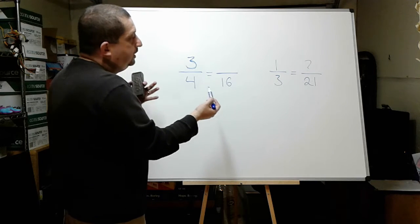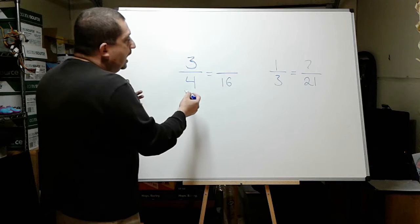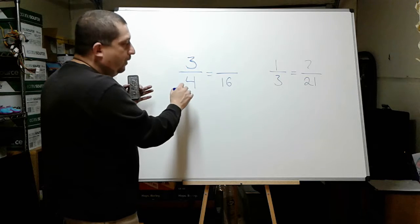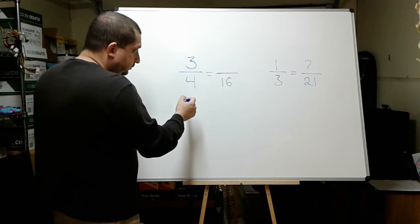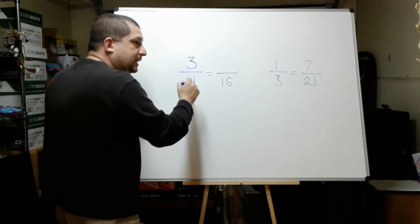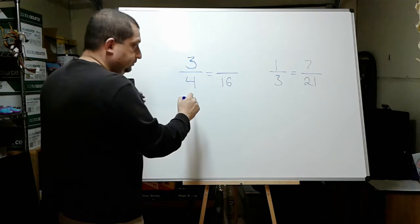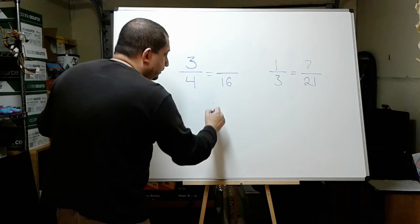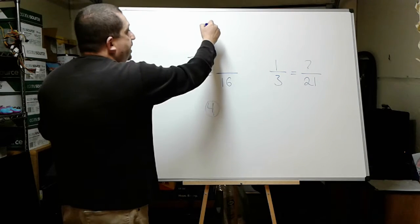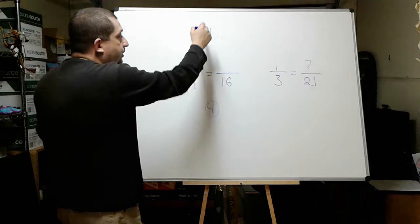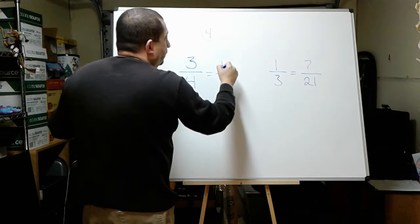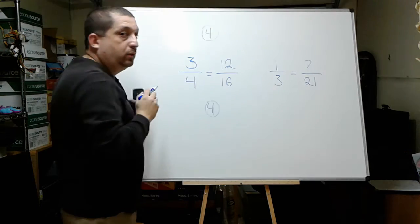Another way that you can do this — and this is the way I do it — I think, okay, what number do I need to multiply times the 4 to get to 16? Remember, the goal is to look for this number. So what number do I need to multiply the 4 times to get to 16? That is 4, because 4 times 4 is equal to 16. I am going to write my number 4 right here too. Now, how much is 4 times 3? That is 12, and 12 is the number that will go here.